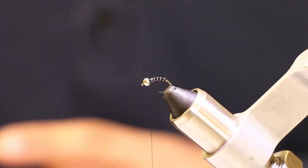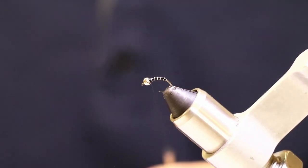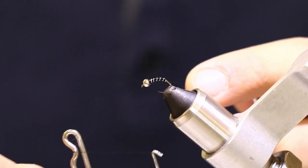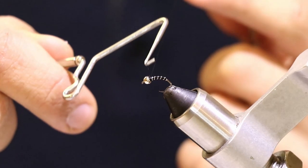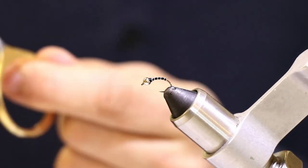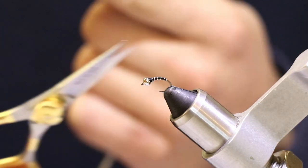So just a whip finish. Get your whip finisher, wrap around here, one two three four five. There you go. And the only thing that's the last step is just to snip off that thread. There you go.